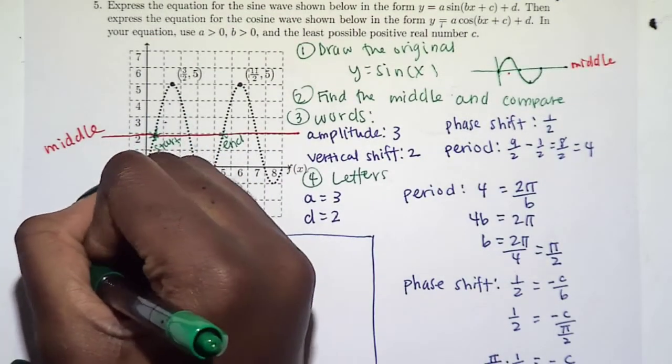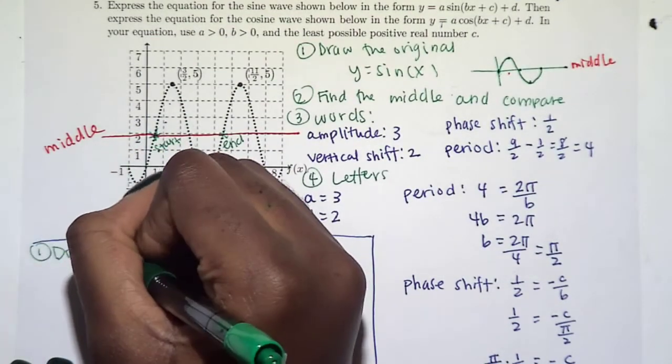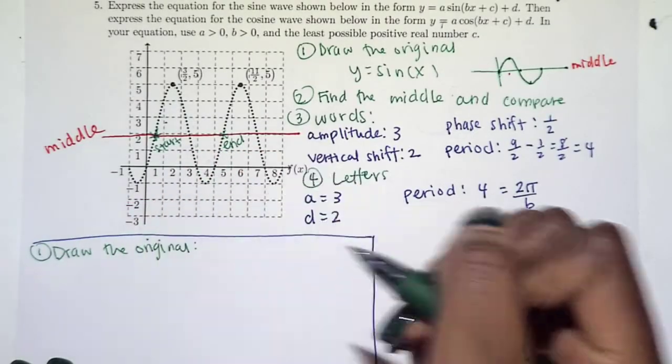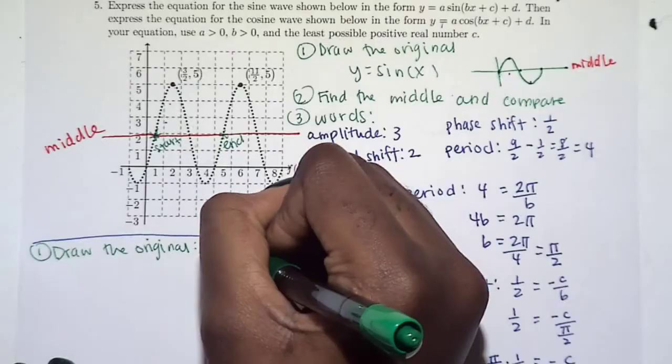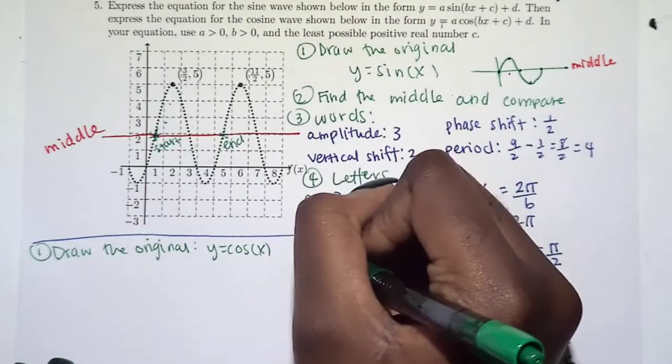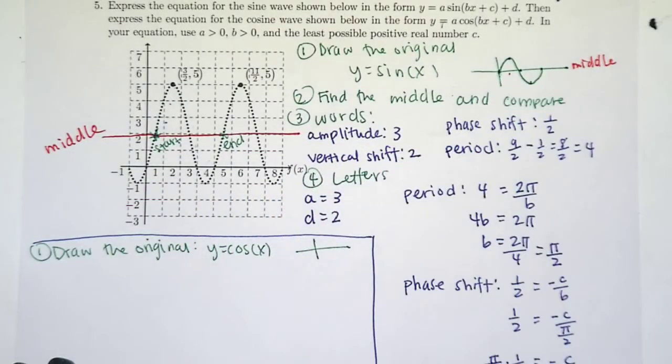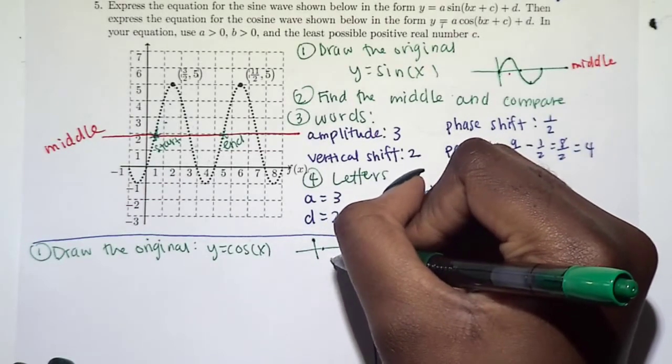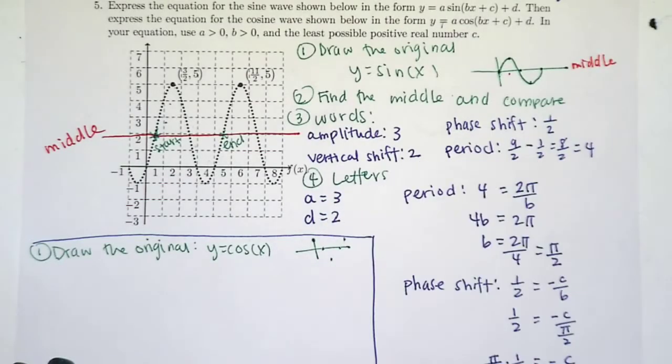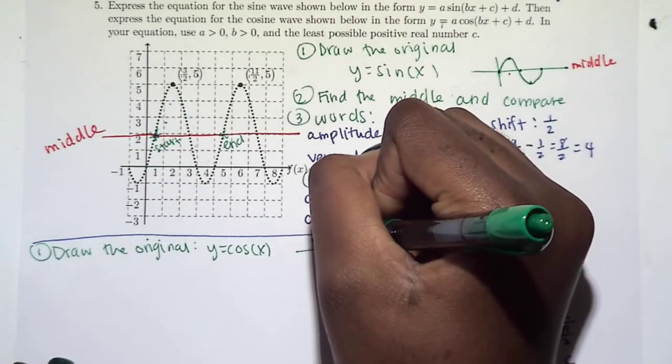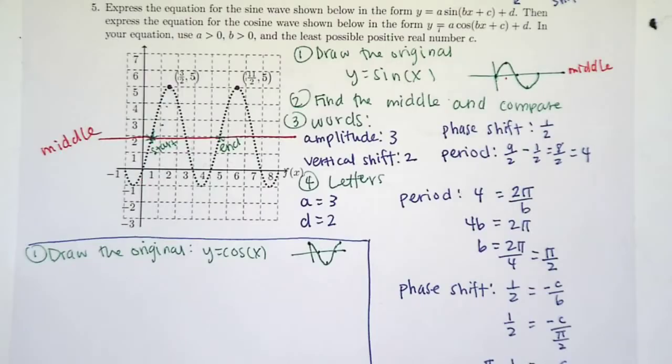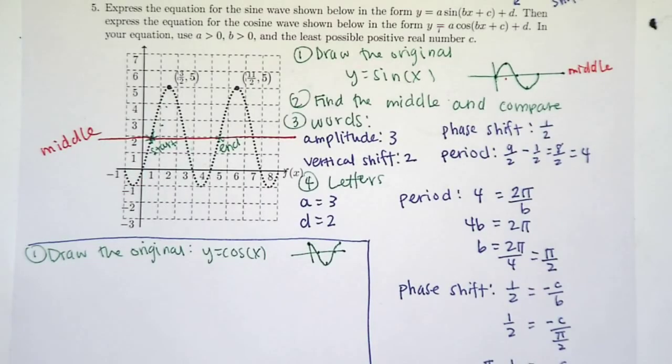All right, so I always like to draw or think of the original just so you have that in your mind. Y equals cosine of X. Remember cosine always starts at 1, 0, negative 1, 0, and 1. So cosine looks like that. And that is what we're going to be trying to match up on our graph.